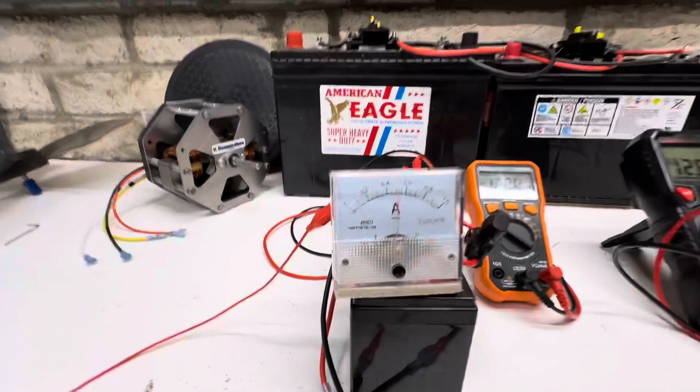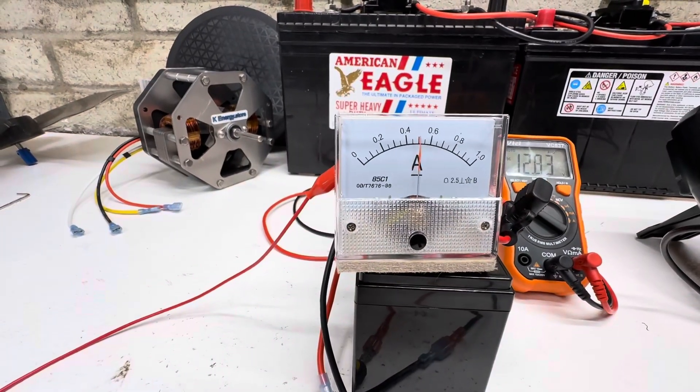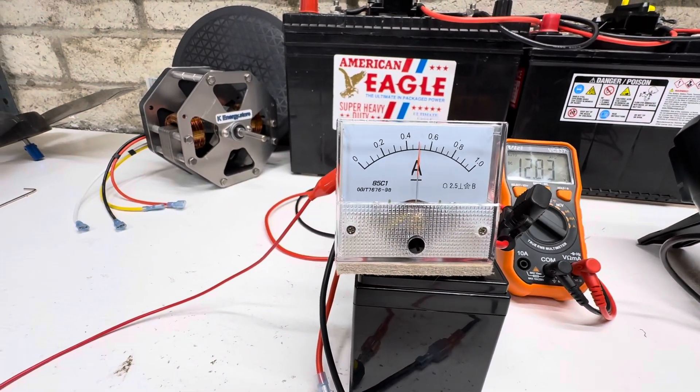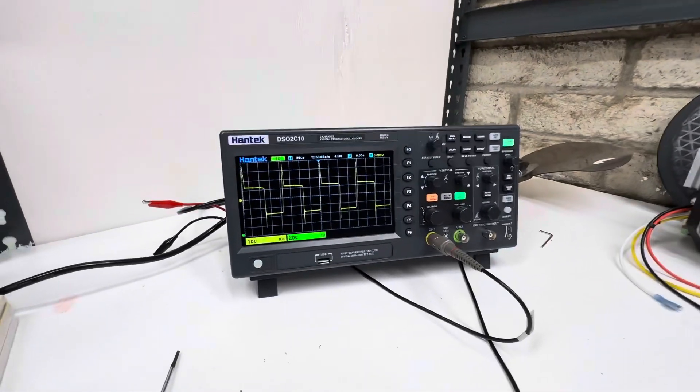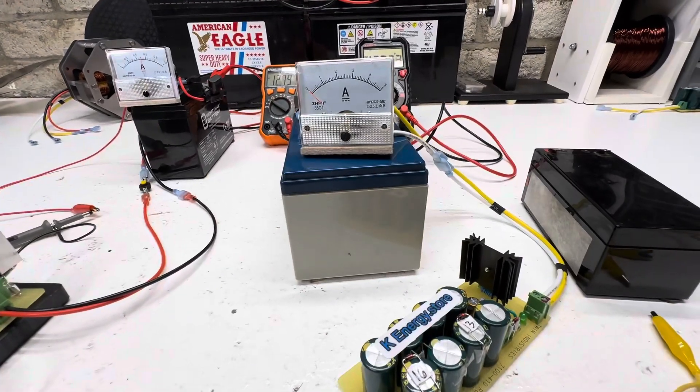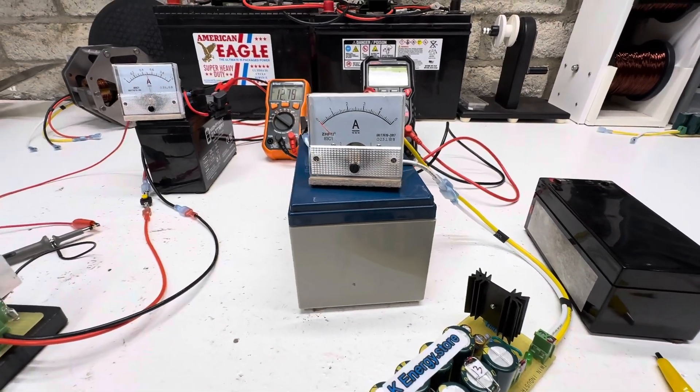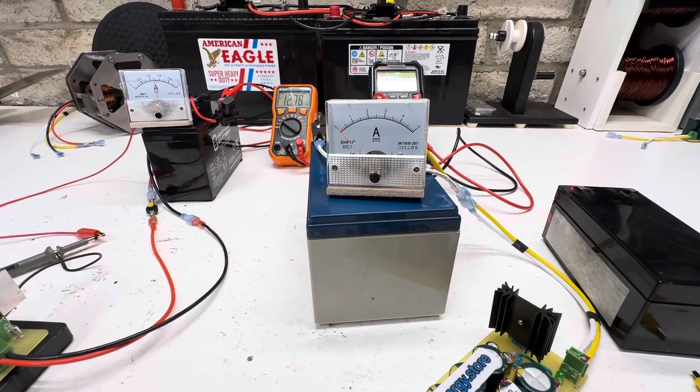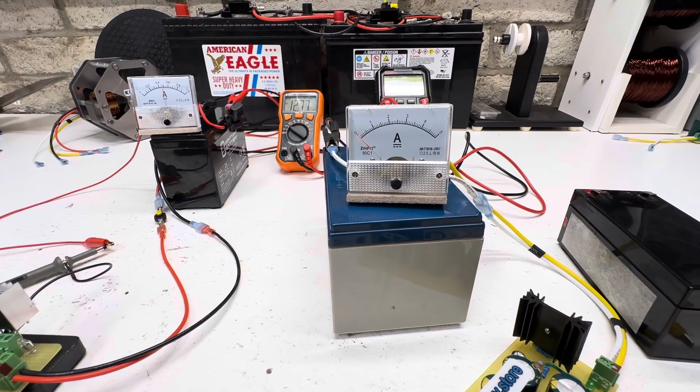As you can see, the amperage climbs up to a half an amp, just a hair over, with the cap dump. As you're charging, the frequency is changing. This is what we're doing right now. We're about four and a half on the scale there, almost five.